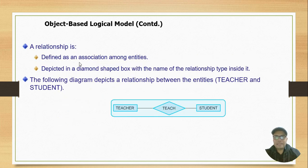A relationship is defined as an association among the entities, depicted in a diamond shape box with the name of the relationship type inside it. The following diagram depicts the relationship between entity teacher and student. One teacher can teach one student—that is called a one-to-one relationship.